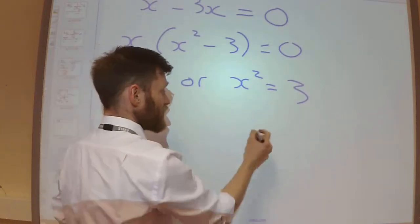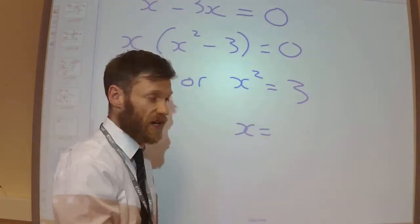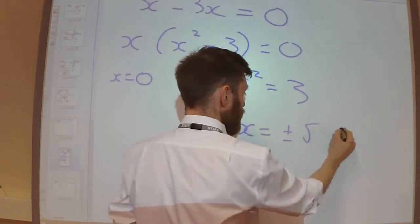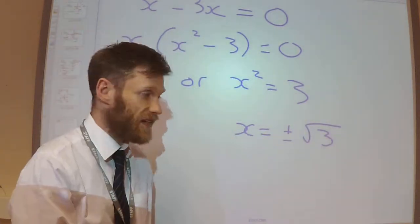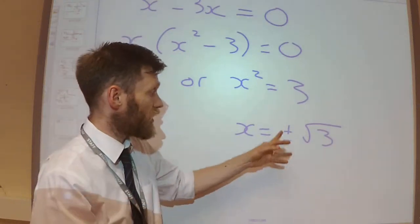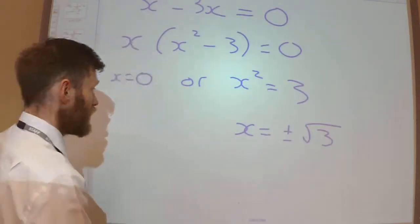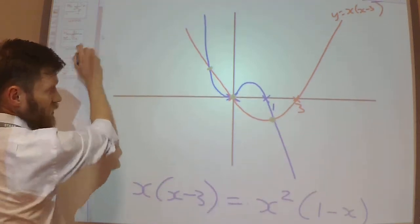So from this, I know if I square root both sides, I know that x will equal plus or minus. Because remember, when you square root, you get a positive and a negative answer. So plus or minus √3.